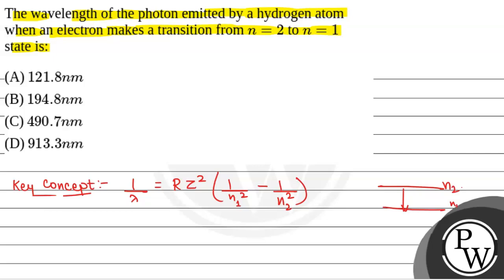Now, we have been given that n2 equals 2 and n1 equals 1. So 1 by lambda will be equal to R into hydrogen atom, so atomic number Z is 1, times 1 by 1 squared minus 1 by 2 squared.